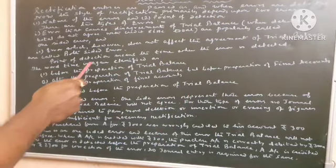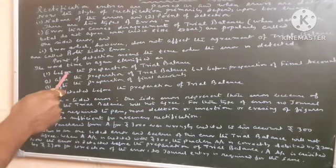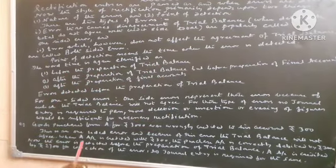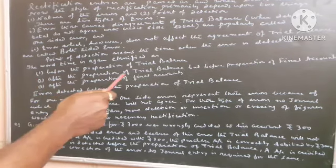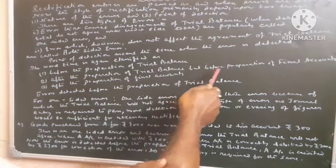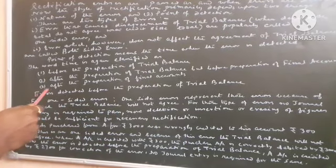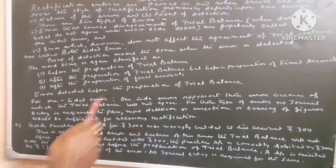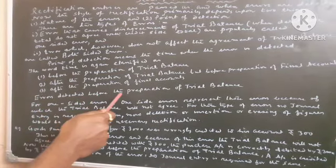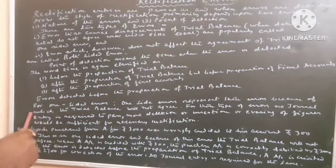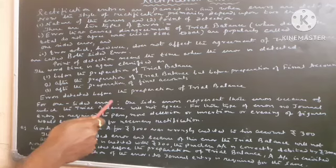The word time is again classified as Number 1, Before the Preparation of Trial Balance. Number 2, After the Preparation of Trial Balance but Before Preparation of Final Accounts. Number 3, After the Preparation of Final Accounts.